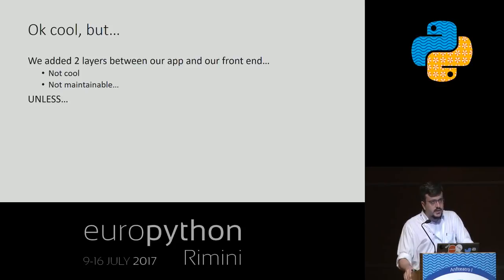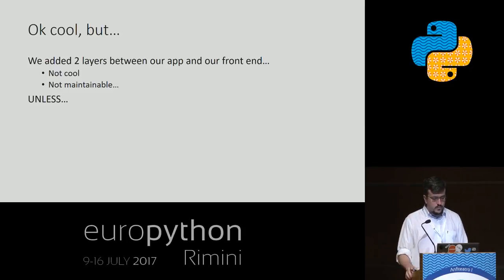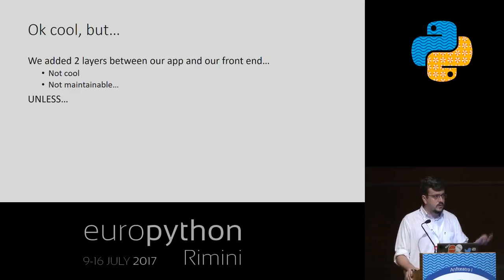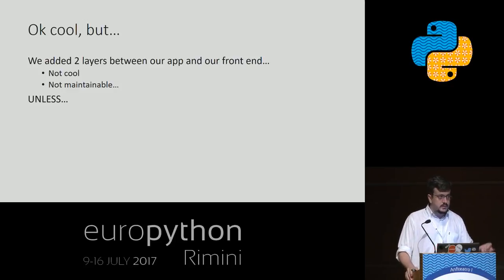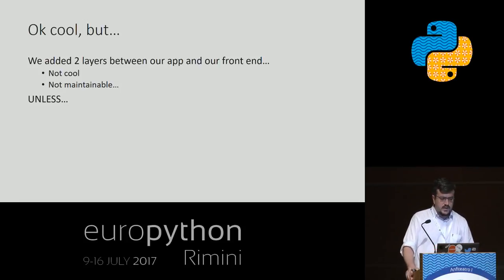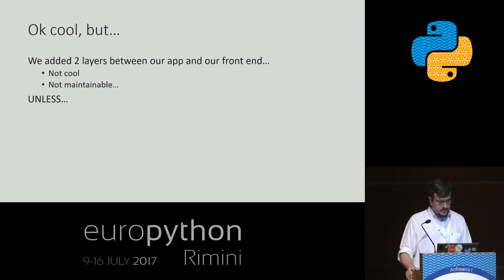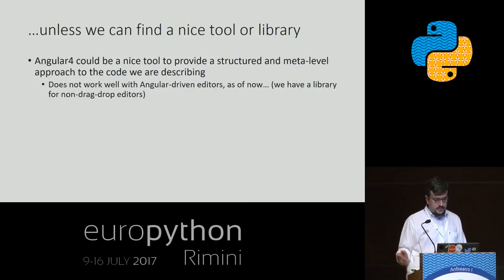But we've added two layers on our app, and that's not cool — it's not maintainable. It's a mess because we have the model, the serializer, and the viewsets. Sometimes we don't have just one serializer for one model — that would be a perfect world. Sometimes we have two, three, or four serializers for one specific model: one for creation, one for details, one for listings, one for nested views or whatever. So it risks becoming really messy, unless we can find a nice tool or library that helps us do cool things on the front end.